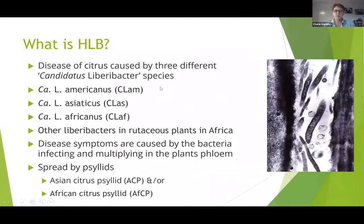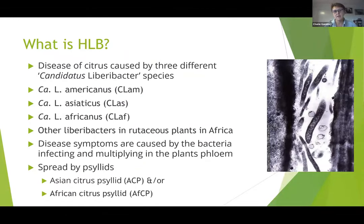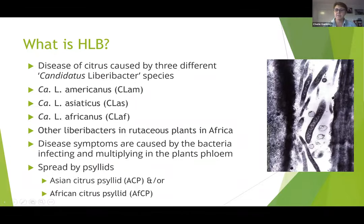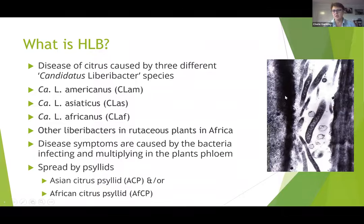What is HLB? It's a disease of citrus caused by three different Liberobacter species: the Americanus, the Asiaticus, and the Africanus. In Africa, they've also found some other Liberobacters in Rutaceous plants, but at the moment they're not affecting citrus. The disease symptoms are caused by the bacteria infecting and multiplying in the plant phloem, and on the right-hand side here you can see the long bacterial cells inside that phloem tissue.